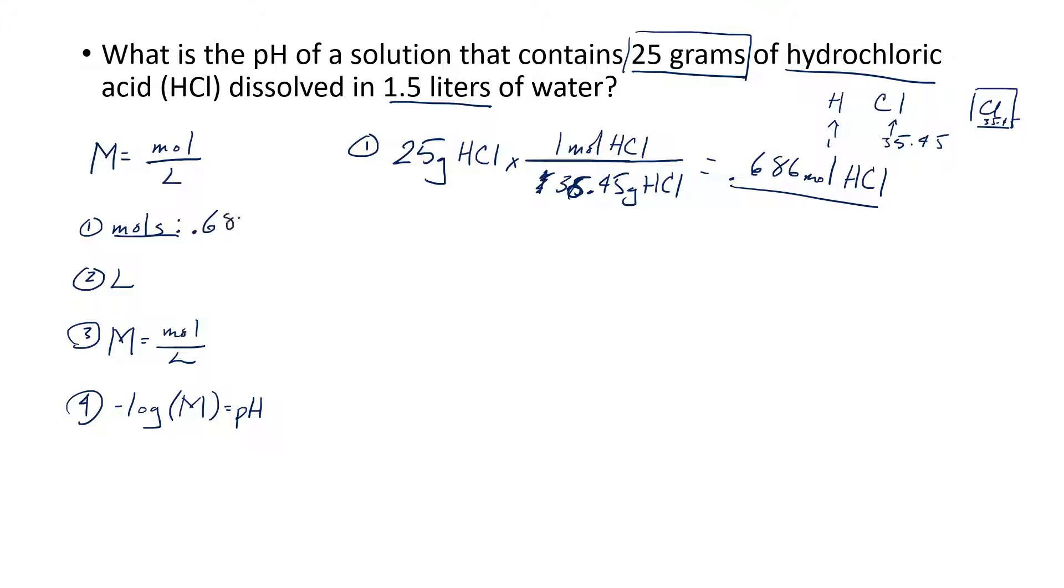We have 0.686 moles. We just need to find the liters now. We already have it: 1.5 liters. So the molarity of this thing is 0.686 moles of H+ (we're assuming the hydrochloric acid dissociates completely) divided by 1.5 liters. When we do that, we get a molarity of 0.457 M. To find the pH, we just do negative log of 0.457. I get a really small pH, 0.34. You know how usually even 1 is super acidic, so less than 1, this is a super strong solution of acid. Done and done.